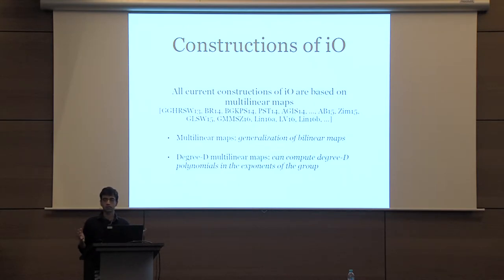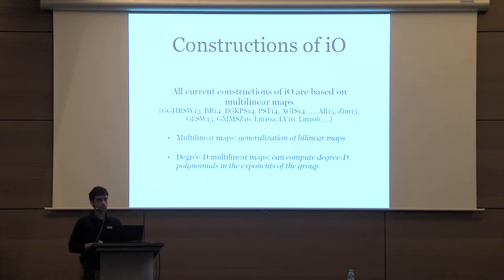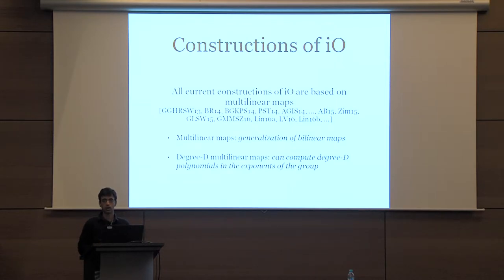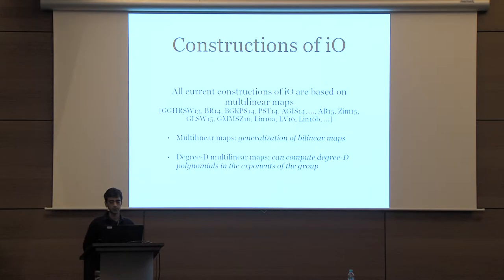All the current known constructions of IO are based on multilinear maps. Multilinear maps are essentially generalizations of bilinear maps. While bilinear maps allow you to compute quadratic functions in exponents of the group, multilinear maps allow you to compute higher degree polynomials in exponents of the group. In particular, we define degree-d multilinear maps to be one where you can compute degree-d polynomials in exponents of the group.